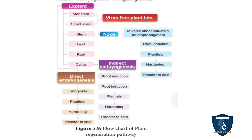First, we are going to see in the flowchart form the plant regeneration pathway. You can see here from the explant — there is a flowchart line. From the explant, direct embryogenesis is seen.